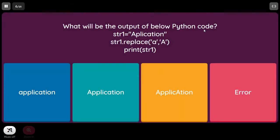What will be the output of the below Python code? str1 equal to 'application', str1.replace('a', 'A'). As mentioned, strings are immutable, so it's not going to replace anything in the original string — the output will still be 'application'. If you want the replaced result, you need to assign it to another variable. Note: there was a typo error in the question preparation — one 'p' was missed — but you can understand the concept. The answer is B.